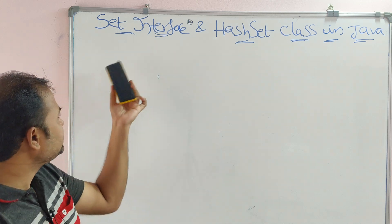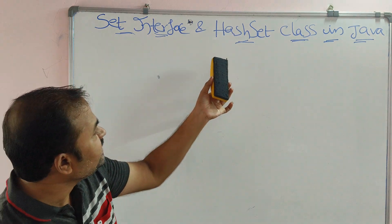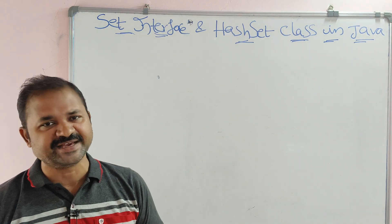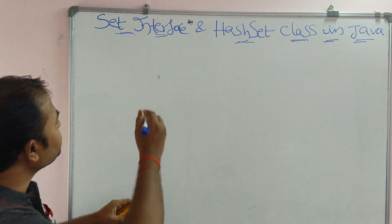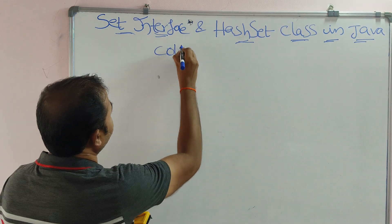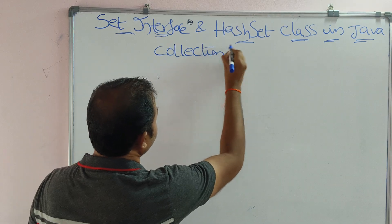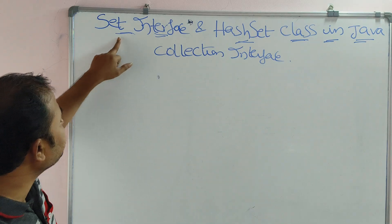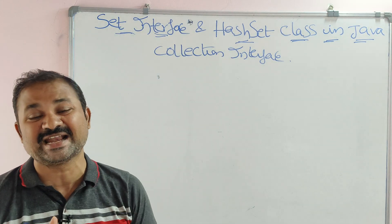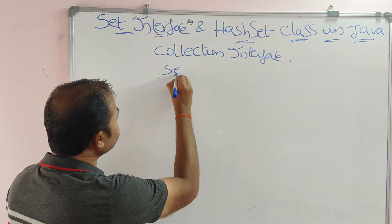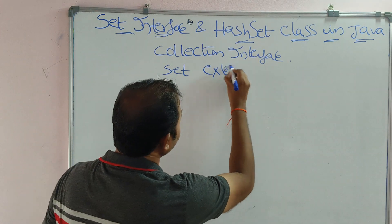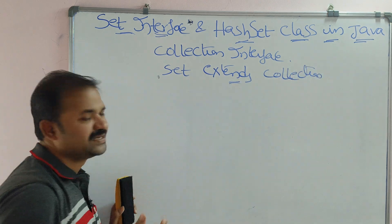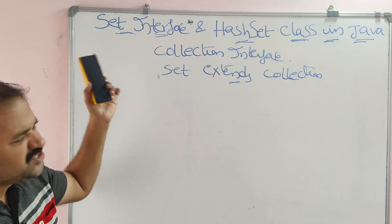Let us discuss the Set interface and HashSet class in collections in Java. Set is an interface available in the Collection interface, so we can say that Set is a child interface of the Collection interface. Set interface extends Collection interface — the relationship between interface to interface uses the 'extends' keyword.